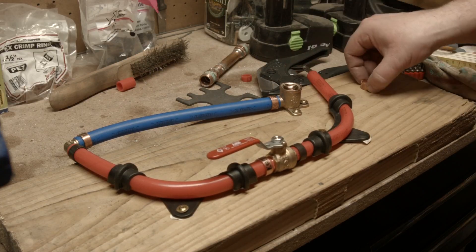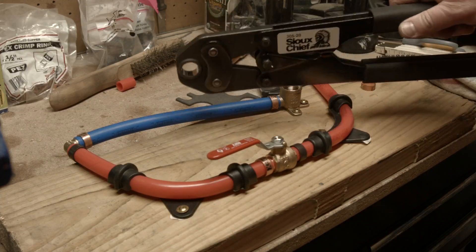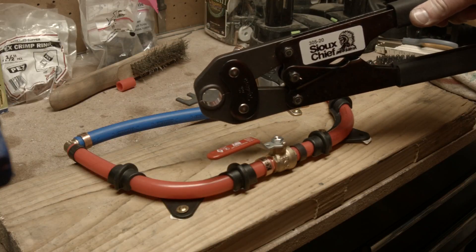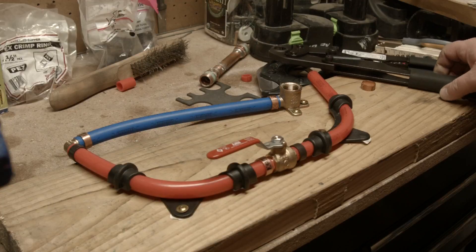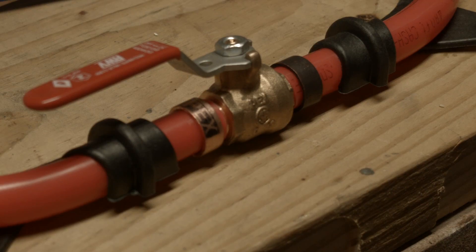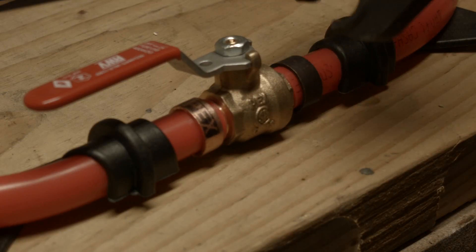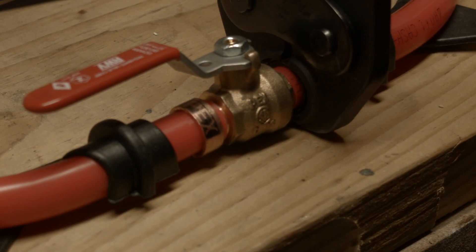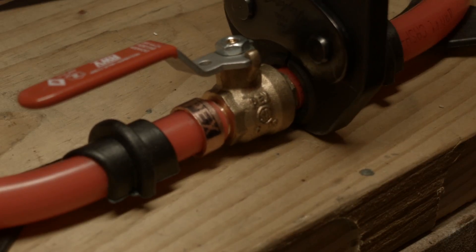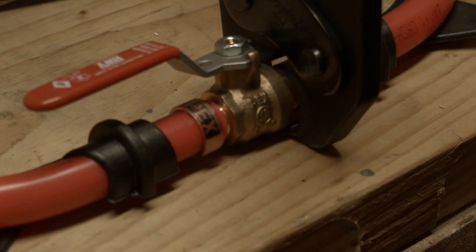You need a tool to compress this copper ring. This is the tool. You put the tool over the copper ring, and then the tool compresses it. Need quite a bit of force to do that. Now let's do the other one here.